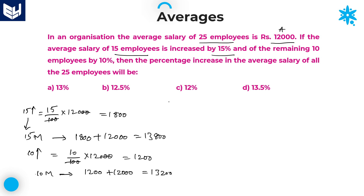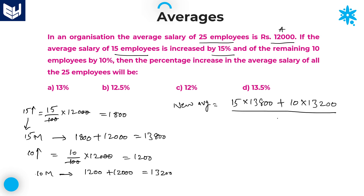Now we will calculate the new average after increment. New average after increment is equal to: first 15 members' average value is 13,800, so their sum is 15 into 13,800; plus the remaining 10 members' average 13,200, so their sum is 10 into 13,200. The new average of all 25 members is the total sum divided by 25.